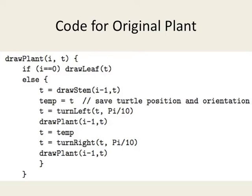Here's the code we had to draw our original plant as a recursive function. It takes as input the level — the number of levels of recursion — and t, the position of the turtle. At the base case, level 0, we just draw the leaf. At all other iterations, we first draw the stem, save the position of the turtle at the branching point, turn the turtle to face left, draw recursively a plant at level i-1, go back to the branch point, turn the turtle facing right, and draw another plant at level i-1. That gives us our exponentially increasing in complexity plant.